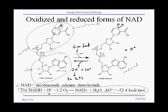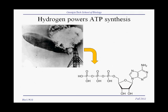When NADH gives up its electrons, eventually to oxygen, the total free energy that's released is a very large negative 52.4 kcal per mole, so it's a highly exergonic reaction. Essentially what we're saying is that cells are powered by hydrogen, because the oxidation and reduction of NADH is essentially the transfer of hydrogen.